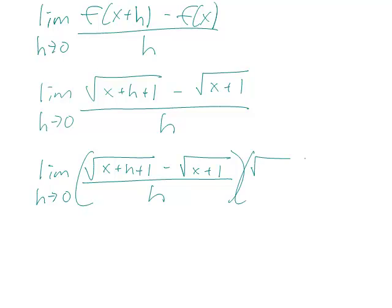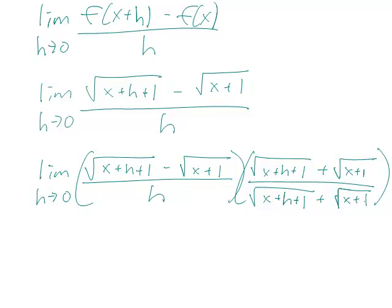That would be square root of x plus h plus 1 plus square root of x plus 1 over the same thing, because we're multiplying by 1.